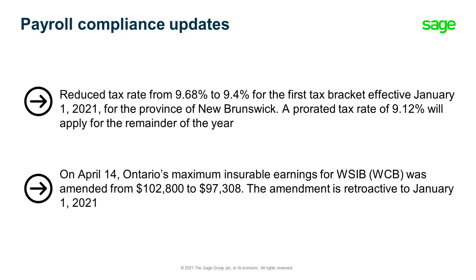In May, the Government of New Brunswick announced a reduction of the tax rate applied to the first tax bracket from 9.68% to 9.4%, effective January 1, 2021. Since employees have been taxed at a different tax rate for the first six months of the year, a prorated tax rate of 9.12% will apply for the remaining six months. In April, the WSIB maximum insurable earnings ceiling was reduced to $97,308 for the Province of Ontario, and this amendment is retroactive to January 1, 2021.